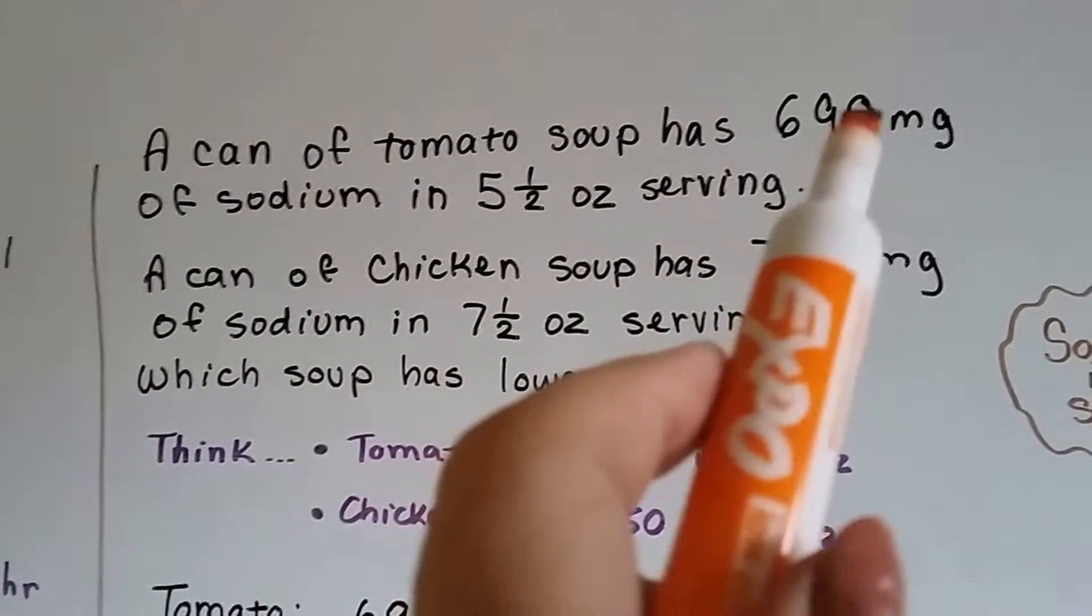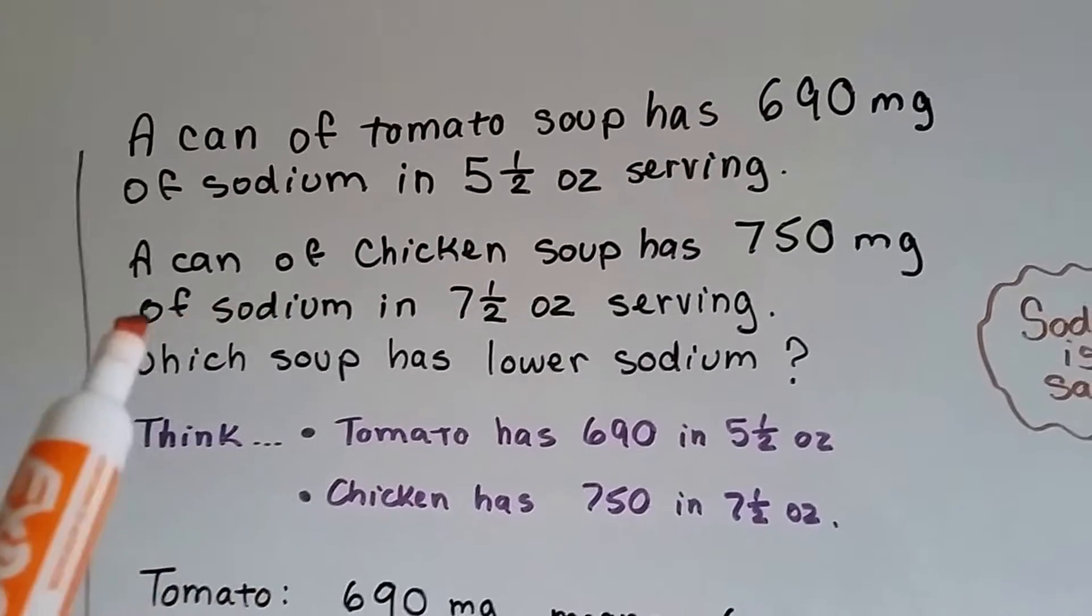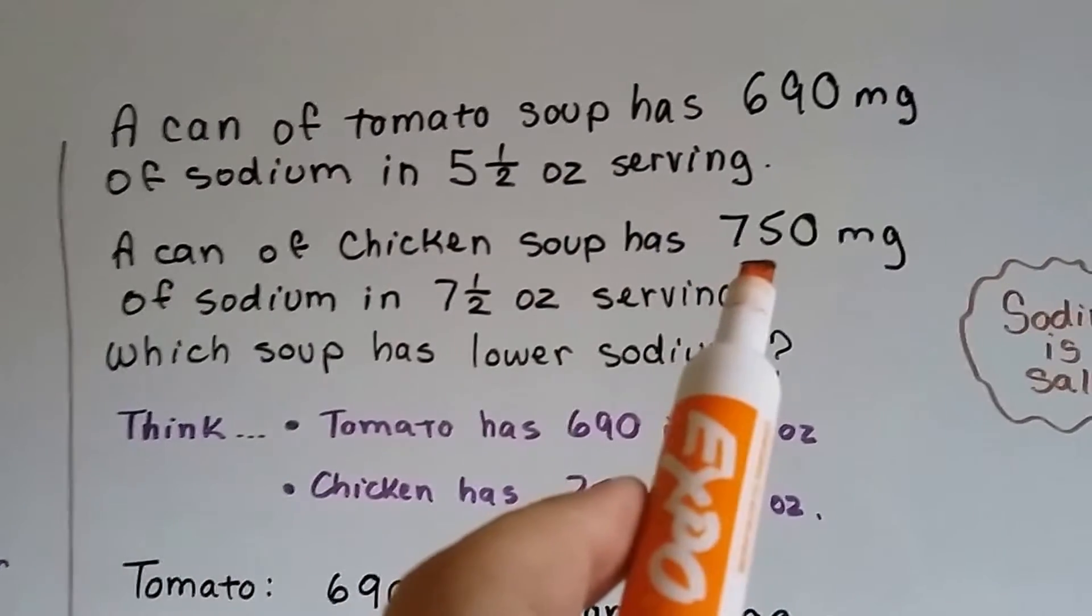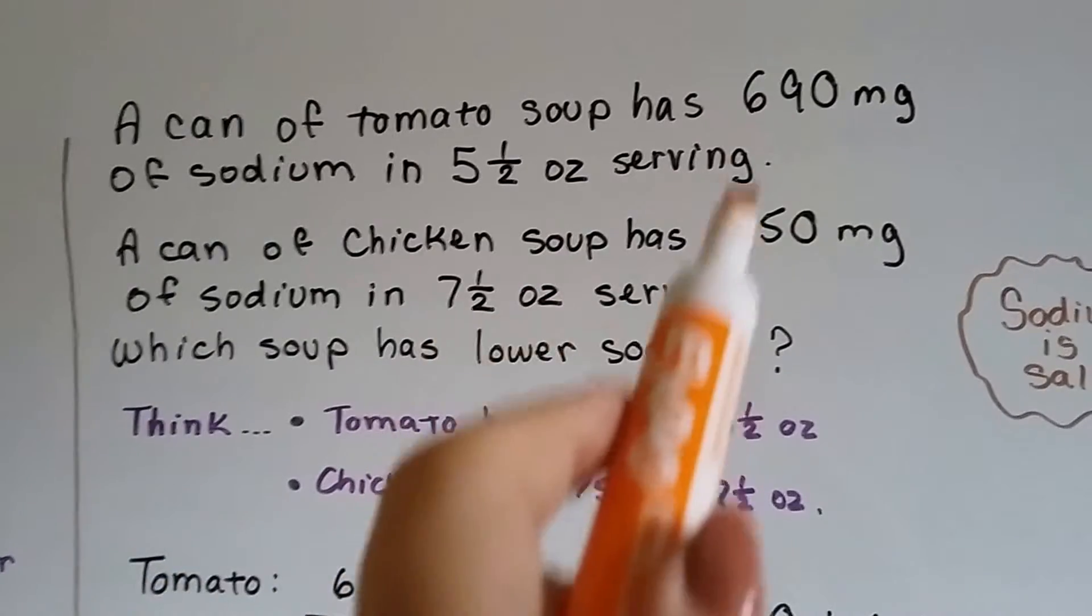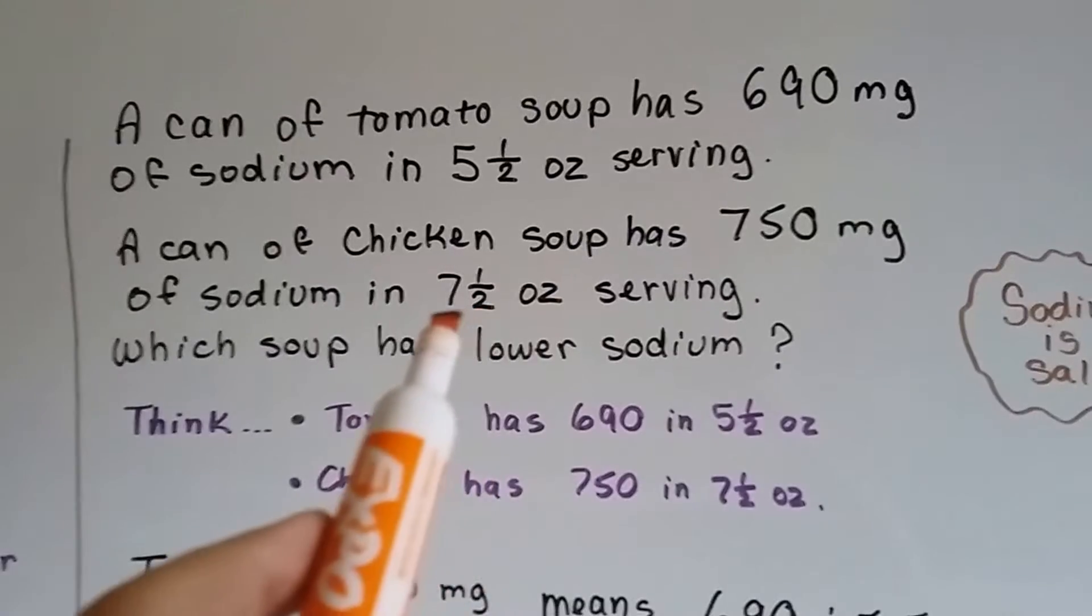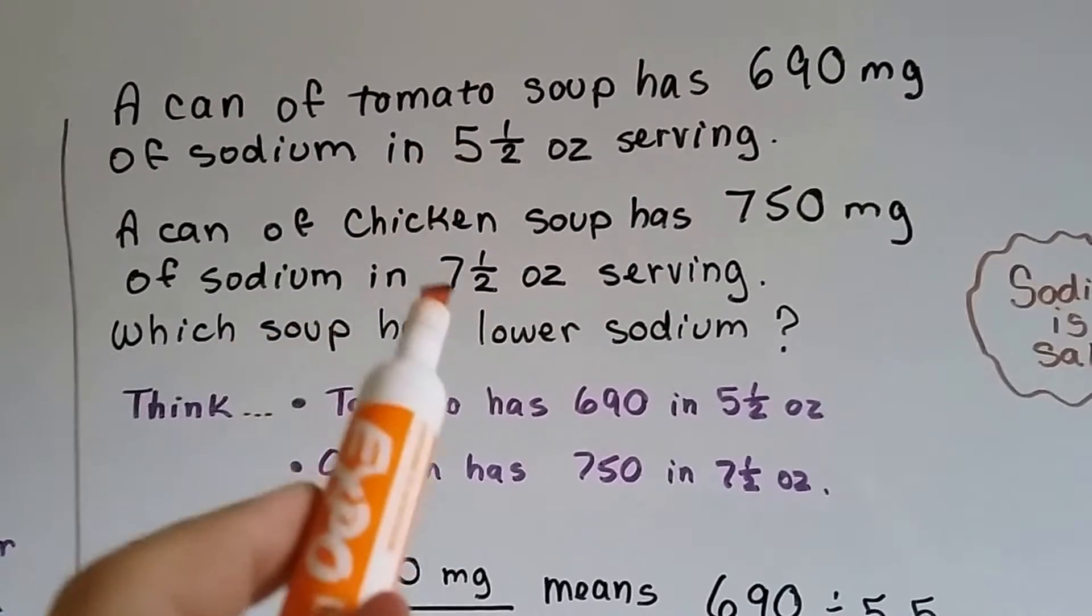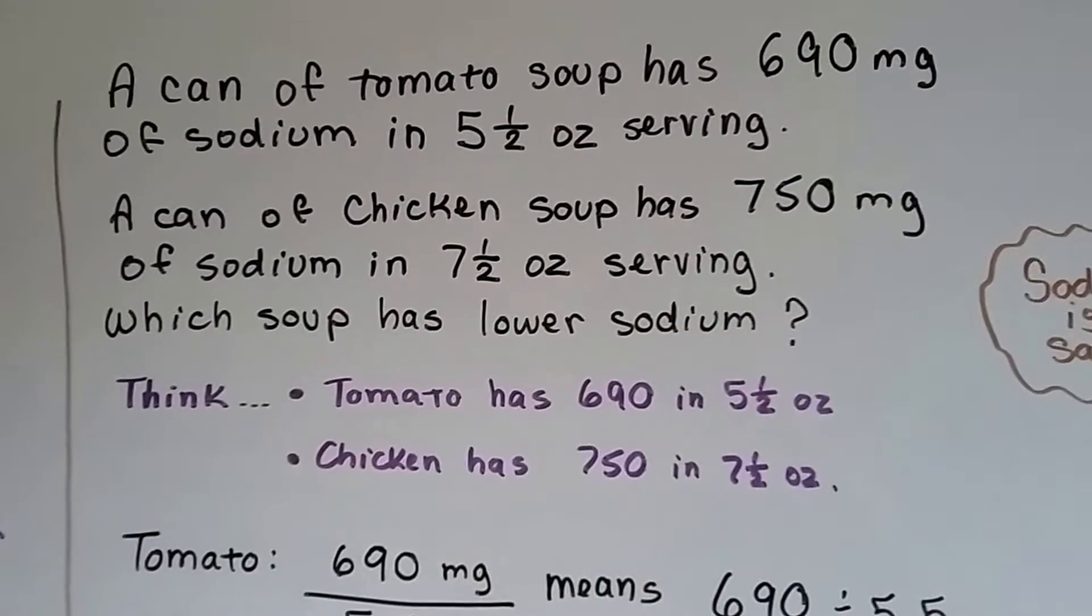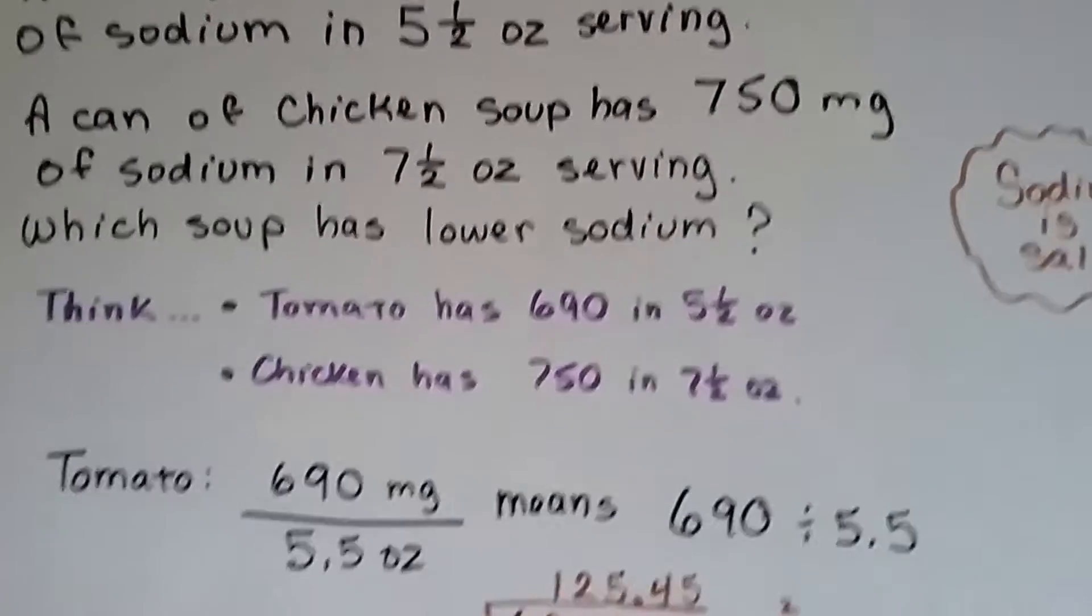So a can of tomato soup has 690 milligrams of sodium in a five-and-a-half-ounce serving. And then a can of chicken soup has 750 milligrams in a seven-and-a-half-ounce serving. Well, that's more than 690, isn't it? But the ounces of serving is more than this serving, isn't it? So which soup has a lower amount of sodium in the serving?